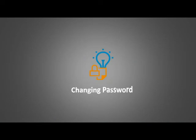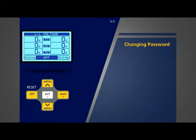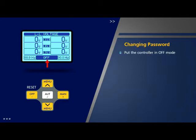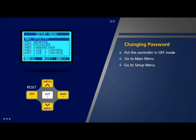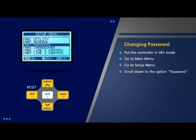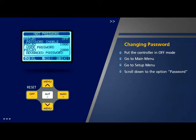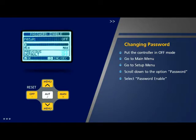Changing password: Let us now look at the enable/disable protection which is available by default and the method to change it. Put the controller in off mode. Go to main menu, scroll to setup menu and press OK. Scroll down to the third option 'Password' and press OK. Now select the option 'Password Enable' and enable the password by selecting 'On' and press OK.